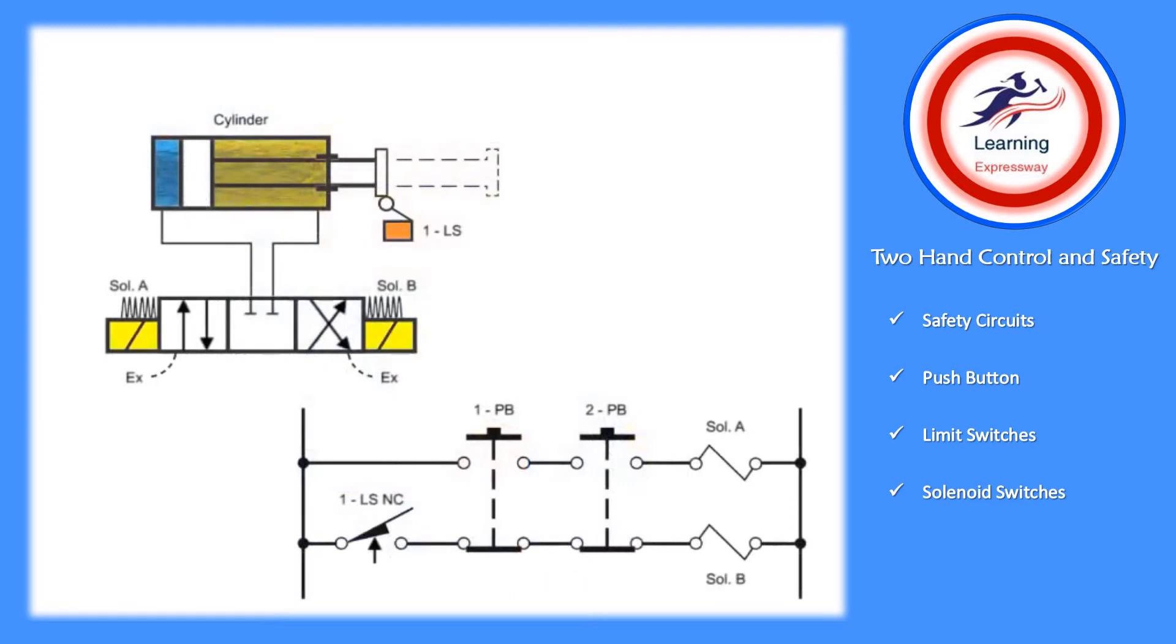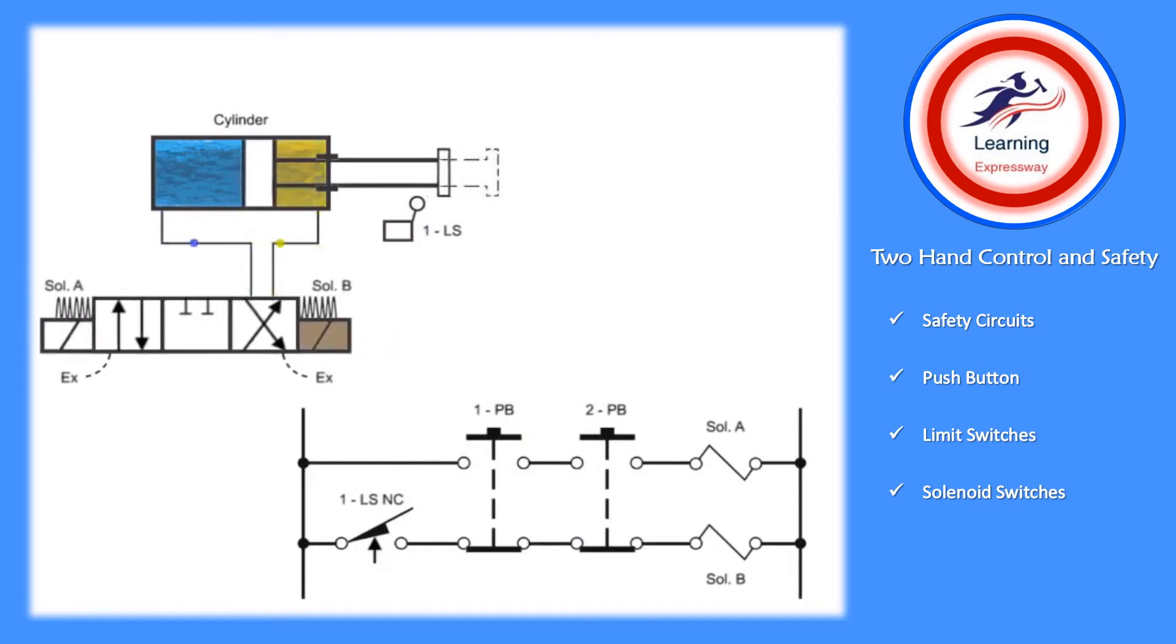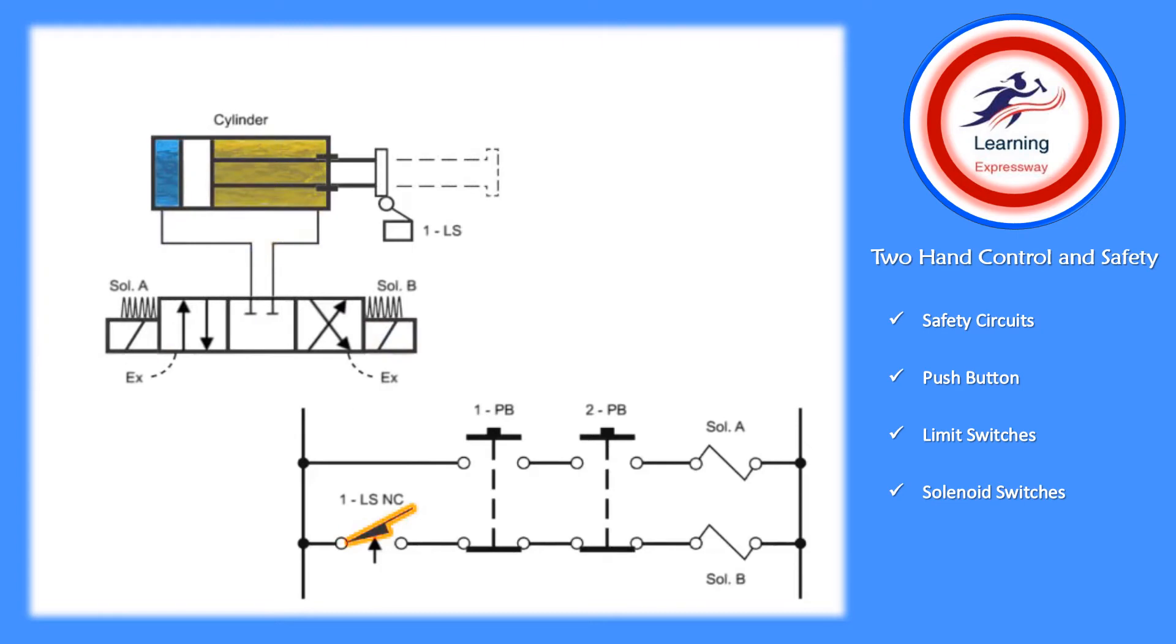In this circuit, a double-solenoid, three-position valve is connected to a cylinder which actuates a limit switch. The valve's solenoids are operated by two buttons, each one having a normally open and normally closed set of contacts. They are wired with both their normally open and normally closed contacts in series.